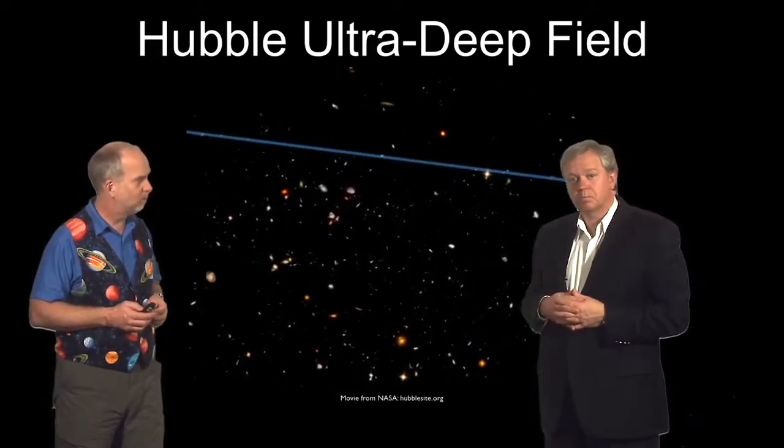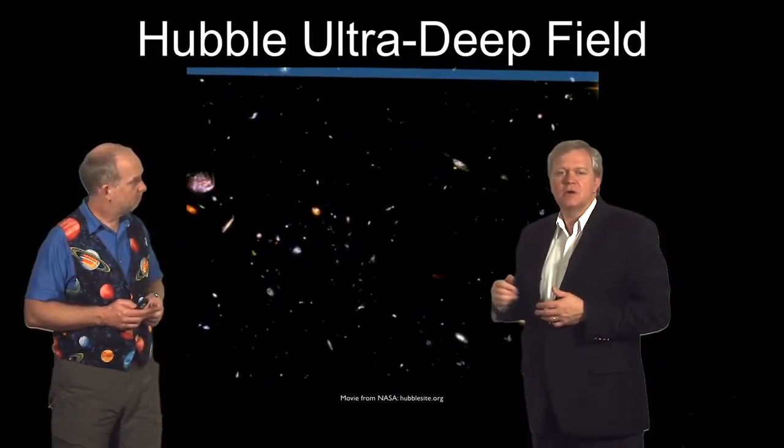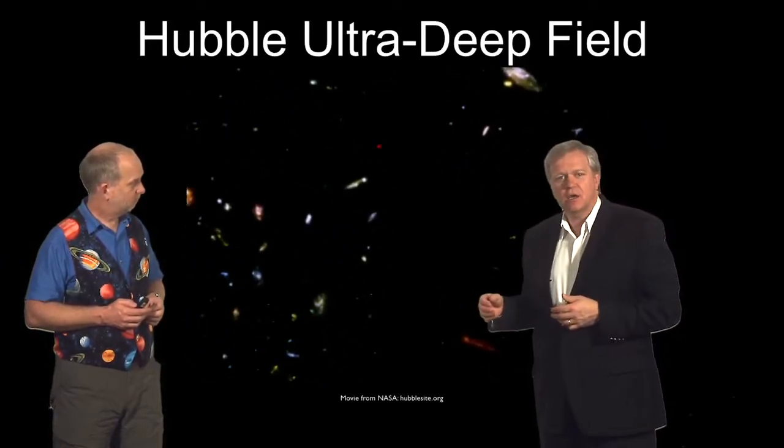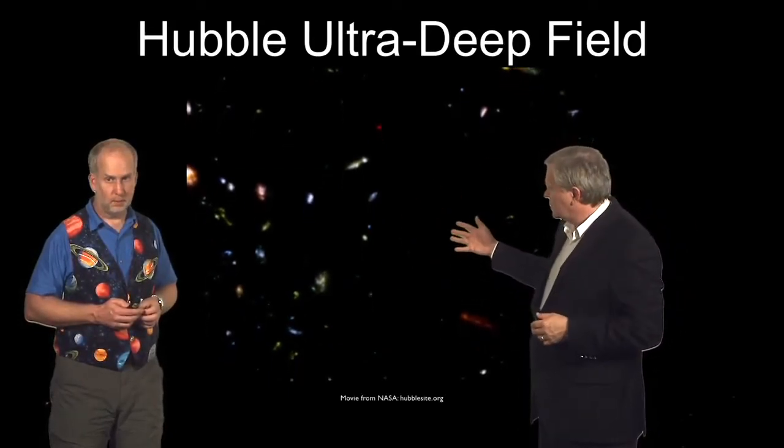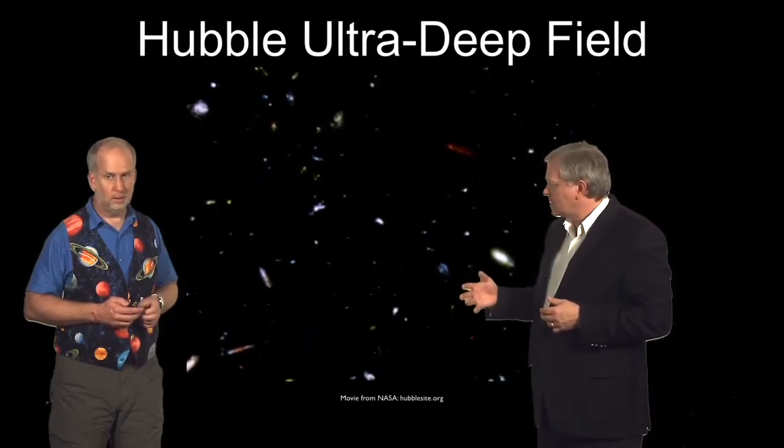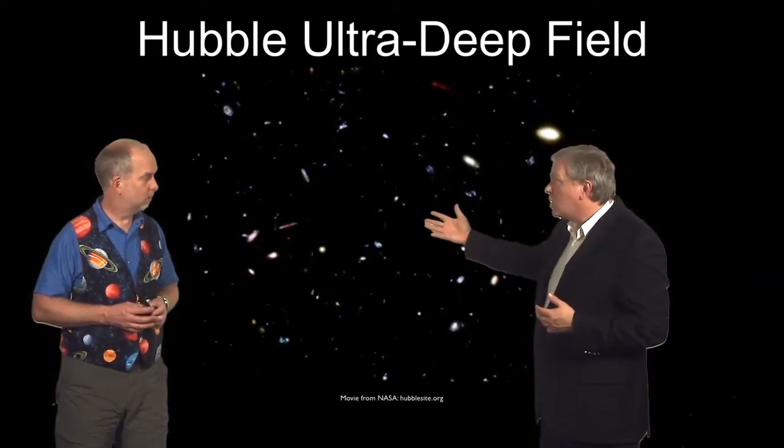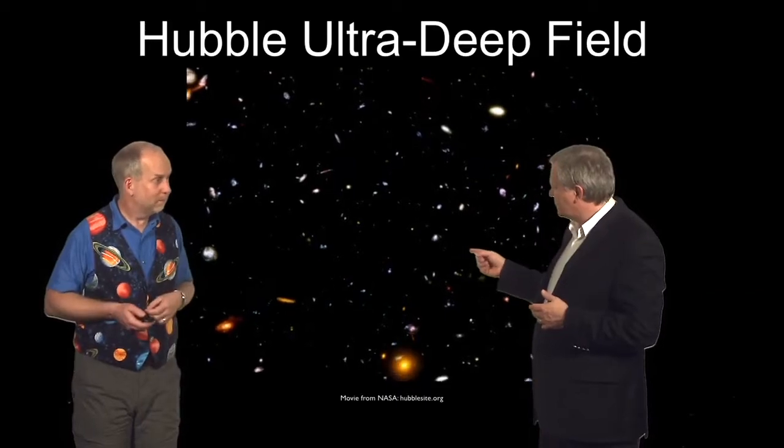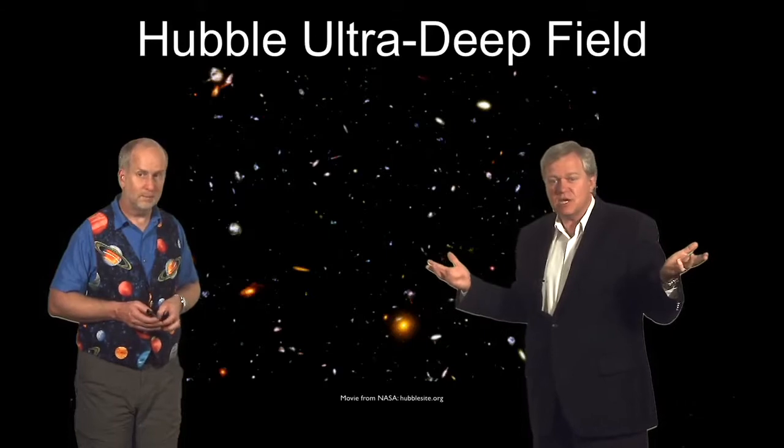The universe looks very uniform. So we're zooming into the deepest image ever taken by the Hubble Space Telescope of a tiny little piece of sky, 1/32 millionth of the entire sky. And we see galaxies spread across the sky at all distances between us and 12 billion years into the past. And the amazing thing is if you look this direction and you look that direction, the other side of the sky, I see exactly the same thing.